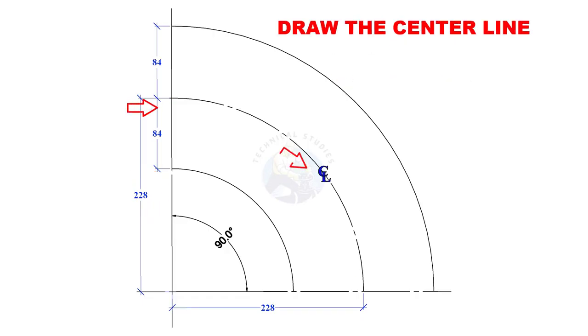Draw the center line of the mitre with a radius of 228 millimeters. Mark 84 millimeters on both sides of the center line and draw arcs.